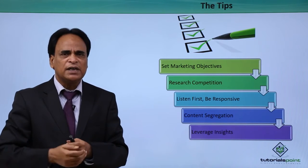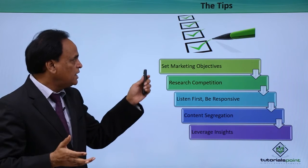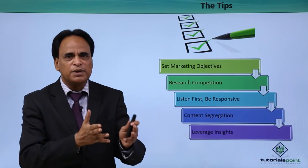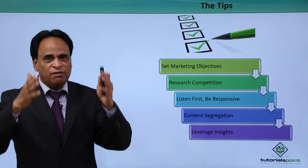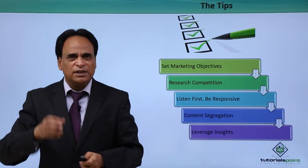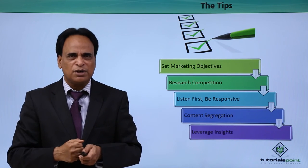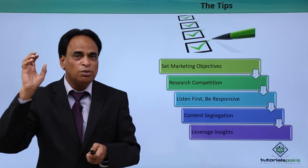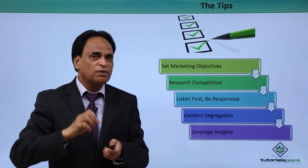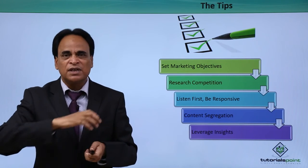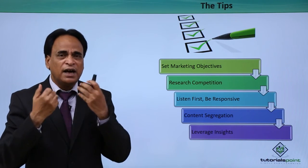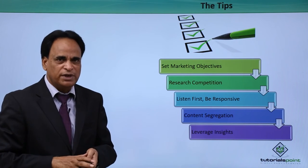Some tips to implement in your social media marketing plan: Set marketing objectives clearly for the business so you know exactly what you want to achieve. Then conduct competitive research — know who your competitors are, where they are located, what business and products they offer, their social media reach, where they promote, how many users and likes they have, and what content they post. Analyze all this before planning your own campaign.